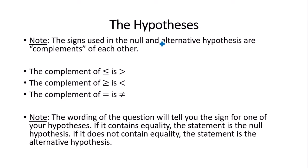The signs used in the null and alternative hypothesis must be complements of each other. For instance, if you were to use less than or equal to in the null hypothesis, you would have to use greater than in the alternative. If you use greater than or equal to in the null, you use less than in the alternative. If you use equal to in the null, you use not equal to in the alternative, and vice versa.